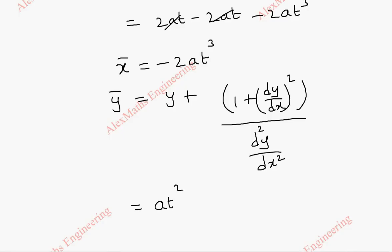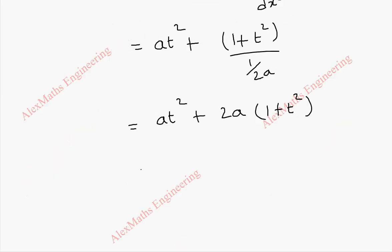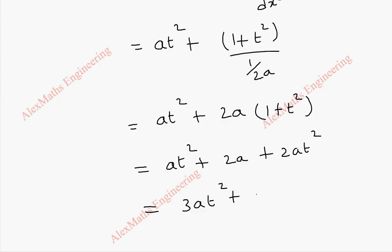Substituting the values, we get at² plus (1 plus t²) divided by 1/2a. Multiplying 2a into the numerator gives 2a into (1 plus t²). When we multiply inside, we get at² plus 2a plus 2at². Combining, this gives 3at² plus 2a.